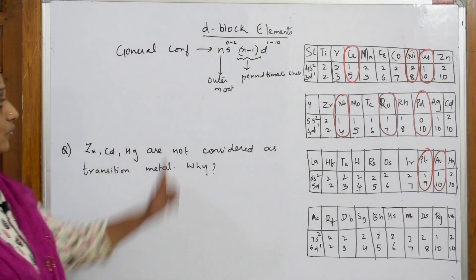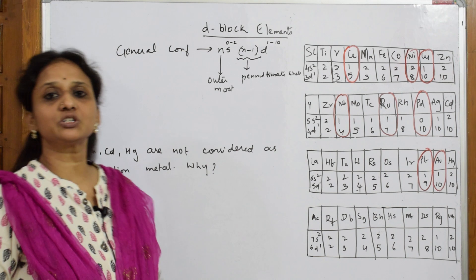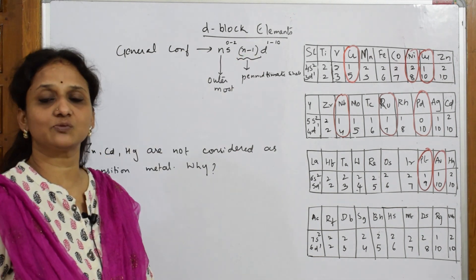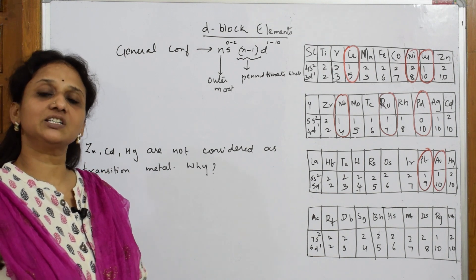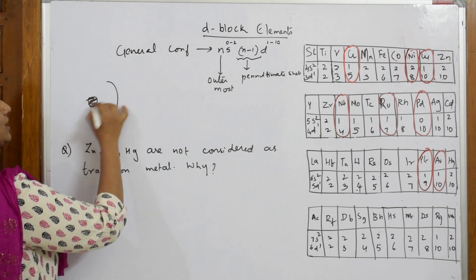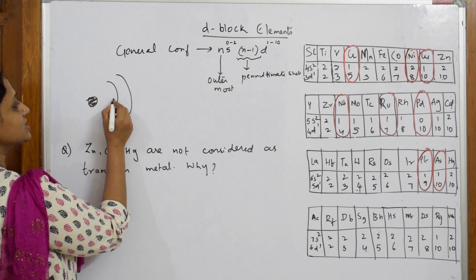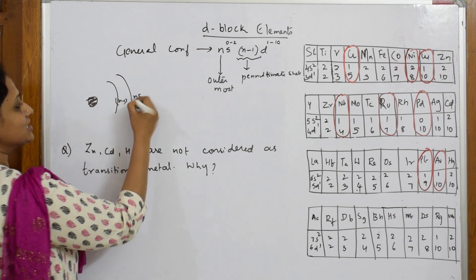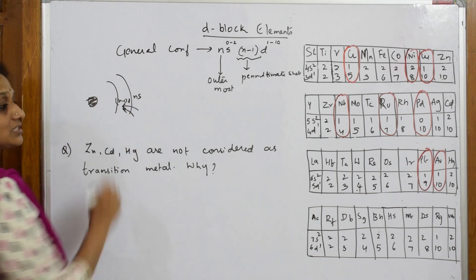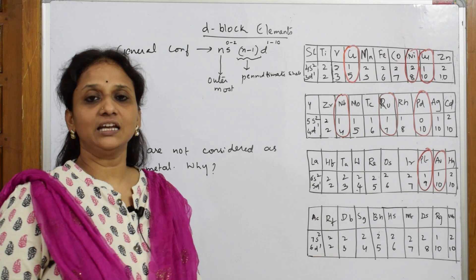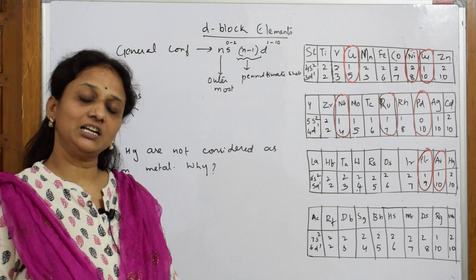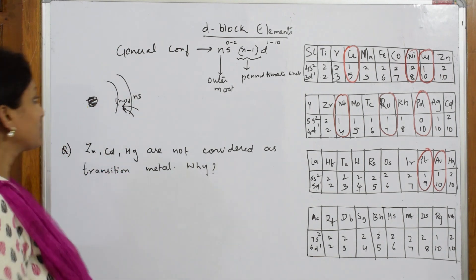Whenever an electron is added into any D block element, the electron will add into the inner penultimate shell, the N-1 D shell. If this is your nucleus, N-1 is the inner shell and NS is the outer shell. Because the electron is entering into the D shell, we call it a D block element — the electron fills into the penultimate shell, that's why we call it D block.